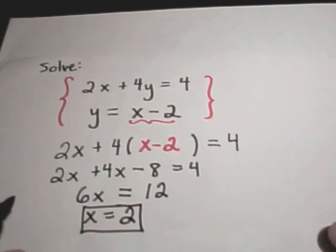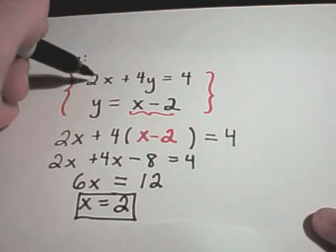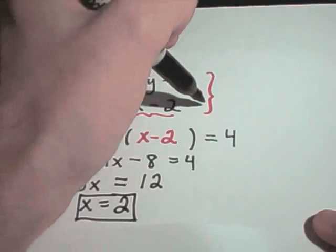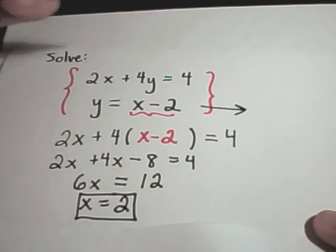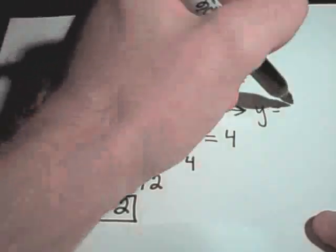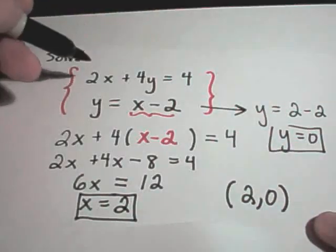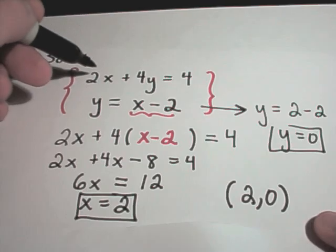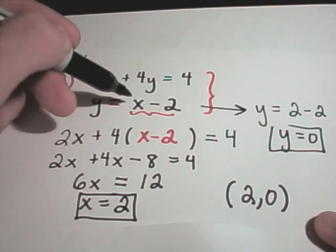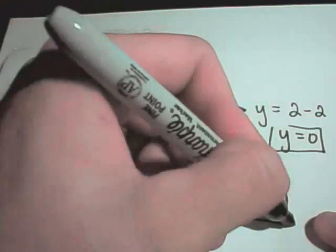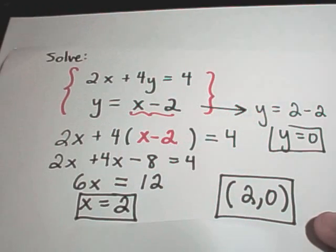Now I've got one of my values. To find the other value, I can take either one of my two original equations and plug in the fact that x equals 2. The second equation seems easiest to use — if I plug in x equals 2, I'll get y equals 2 minus 2, or y equals 0. So the solution is the point (2, 0). If you plug (2, 0) into the first equation you get 4 on the left, and these two lines are crossing at the point (2, 0).